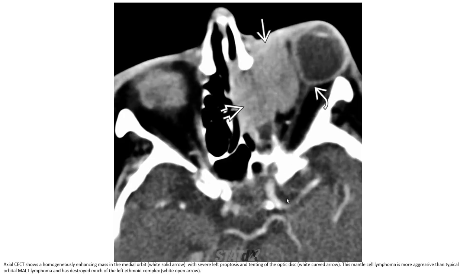This is also an axial contrast-enhanced CT showing a homogeneously enhancing mass in the medial orbit with severe left proptosis and tenting of the optic disc. The cell lymphoma is more aggressive than typical and has destroyed much of the left ethmoid complex.